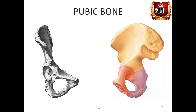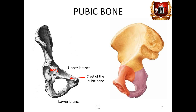The pubic bone, os pubis, consists of a body and two branches, the upper and lower, ramus superior and inferior osis pubis, which limit the obturator foramen. The body of the pubic bone forms the anterior section of the acetabulum and directly passes into the upper branch. The upper edge is pointed and is called the crest of the pubic bone, pecten osis pubis. In front, the crest ends with a pubic tubercle, tuberculum pubis.